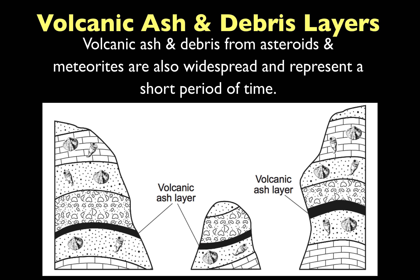Looking at this diagram, we have three different columns of rock layers, and each rock layer contains volcanic ash. After a major volcanic eruption, the ash can spread to locations all around the world and become part of the rock record. Since the volcanic ash is found in all three columns and in one row in each column, we can consider it to be a geologic time marker, just like an index fossil.